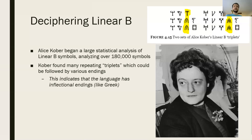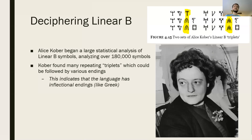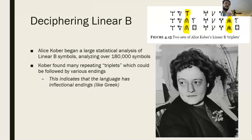Not all languages are like this. Inflectional morphology is common in languages like Greek and many other European languages. You won't find it as much in languages like Chinese or Vietnamese, which don't use inflectional morphology. So this gives a good indication that the language these symbols represent is ancient Greek, or at least a predecessor of ancient Greek.